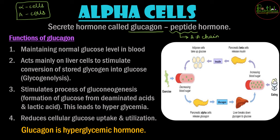Glucagon, when released in the body, brings about physiological changes that are its functions. Glucagon is majorly released for maintenance of the normal blood glucose level. If blood glucose goes up or comes down, the body faces trouble. Two hormones from the pancreas help maintain blood glucose level — one from alpha cells and one from beta cells. Glucagon from alpha cells acts on the liver cells called hepatocytes.